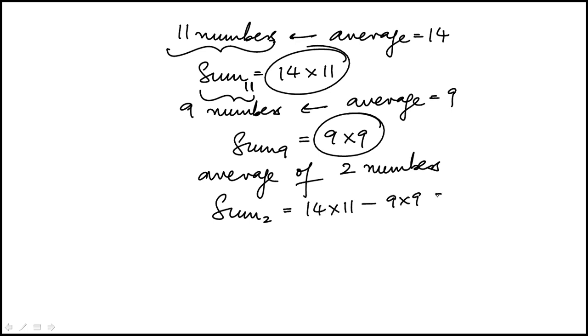So I need to compute this. And so 14 times 11 is 14 times 10 is 140. And then another 14, so that's 154. And then I have to subtract 81 from this. That becomes 73.